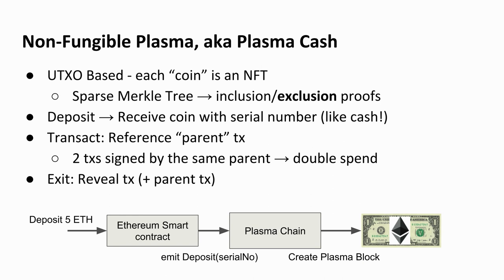In this version of Plasma called Plasma Cash, it's a UTXO-based Plasma chain where each coin is a non-fungible token — literally like cash, you cannot tear it apart. It's unique, it has a serial number, and the UTXO format is one input, one output: you just sign the new owner of the UTXO over. It uses a data structure called the Sparse Merkle Tree, an ordered Merkle tree which allows both inclusion and exclusion proofs. Whenever you deposit a coin, you receive the serial number. Whenever you make a transaction, you reference a parent transaction, and if you equivocate — signing two messages for the same coin with the same parent — it's a double spend and you can be challenged.